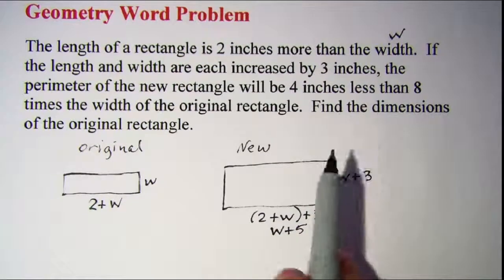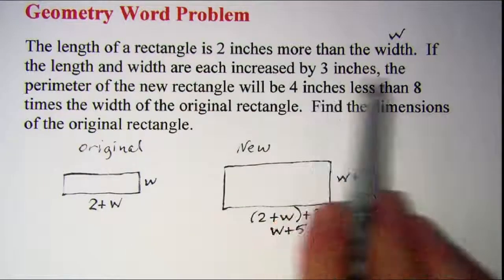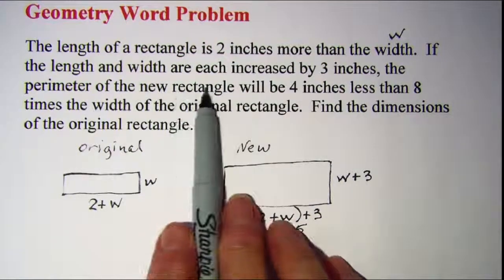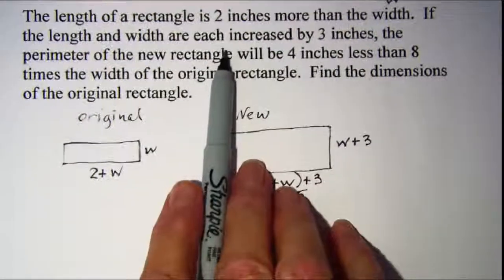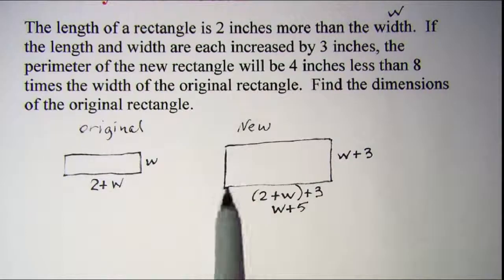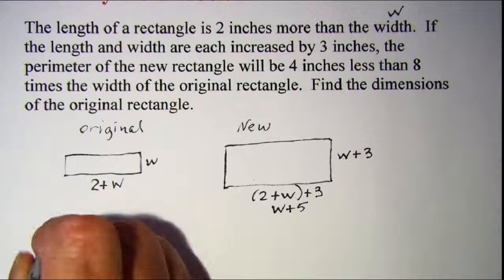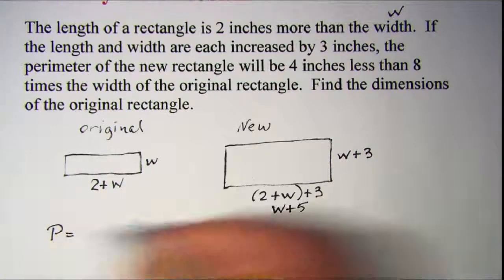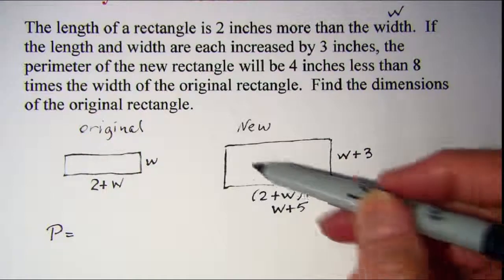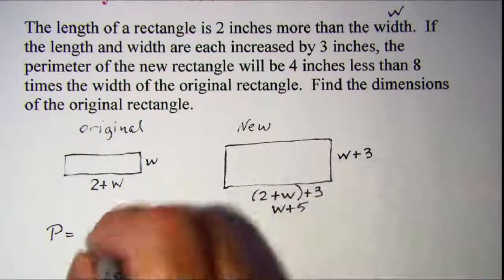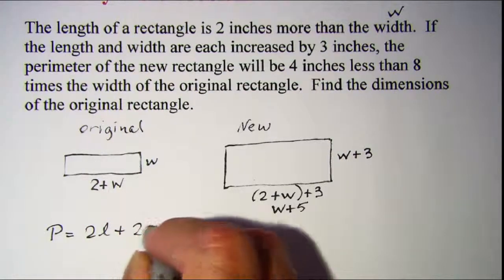Now I haven't finished that sentence yet. It says if this happens, the perimeter of the new rectangle—remember perimeter is the distance around—so I'm going to use the formula. Perimeter is two lengths plus two widths added together, so 2l + 2w.